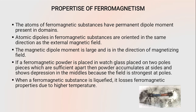Properties of ferromagnetism: atoms of ferromagnetic substances have a permanent dipole moment present in the domain. Atomic dipoles are oriented in the same direction as the external magnetic field. The magnetic dipole moment is large and in the direction of the magnetizing field. The intensity of magnetization is very large and positive, varying linearly with the magnetic field. Ferromagnetic substances are strongly attracted by the field, tending to stick at the poles in a non-uniform field. When a ferromagnetic substance is liquefied, it loses its ferromagnetic properties due to higher temperature.